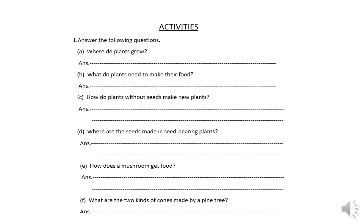Part B is: what do plants need to make their food? You know that plants need air, water, sunlight, and chlorophyll to make their food. So you can write: they need air, water, sunlight, and chlorophyll to make their food.